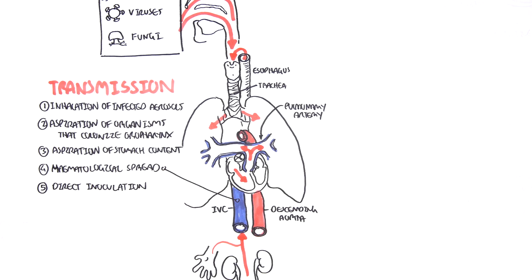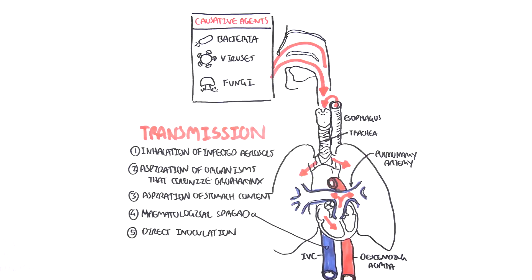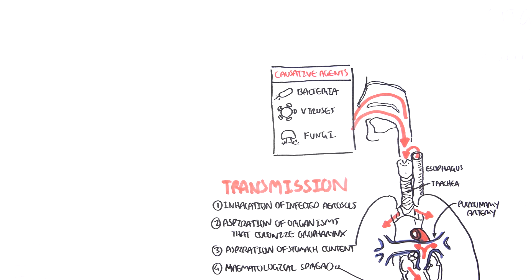So we categorize pneumonia before into the areas of lung affected, which is into lobar pneumonia and bronchopneumonia. But we can also categorize pneumonia into the location where the infection was acquired as well as the cause of infection, such as aspiration pneumonia and also the severity, chronic pneumonia.